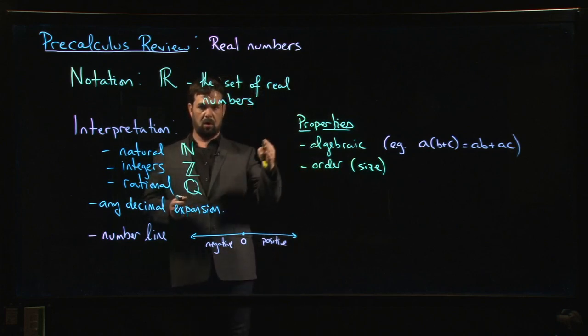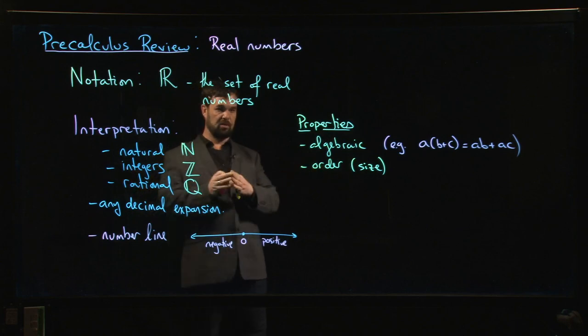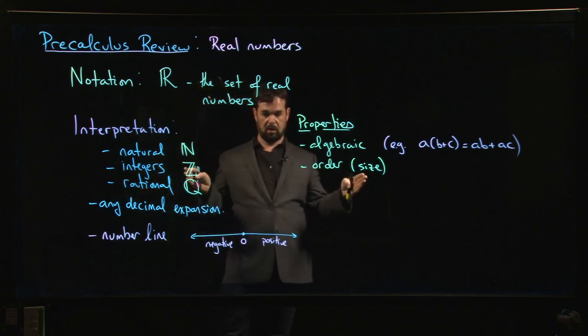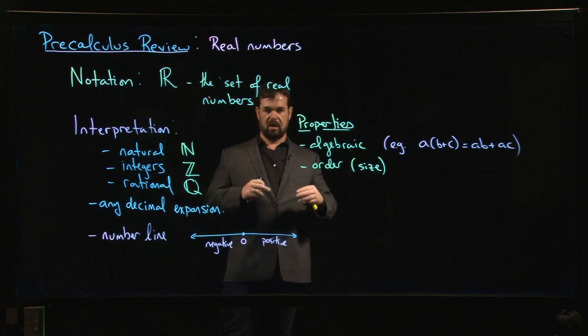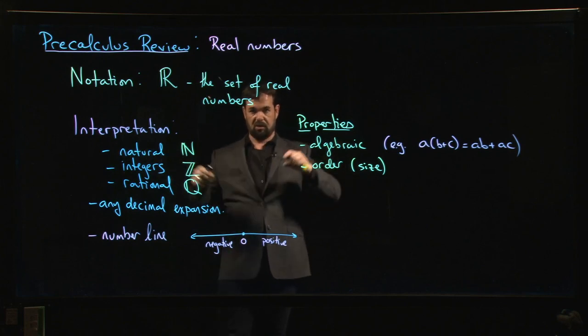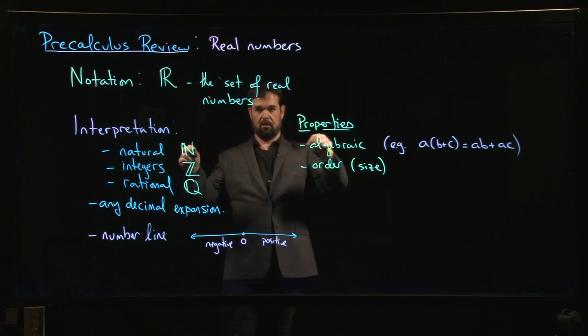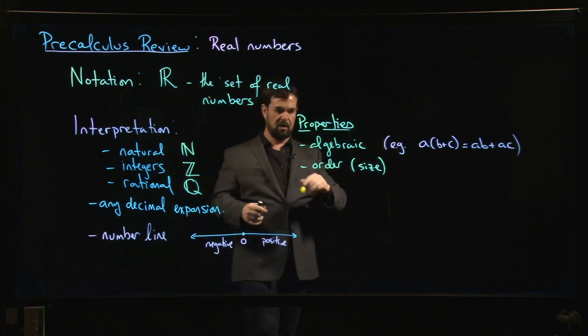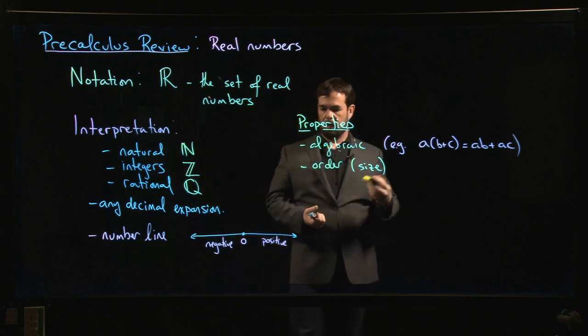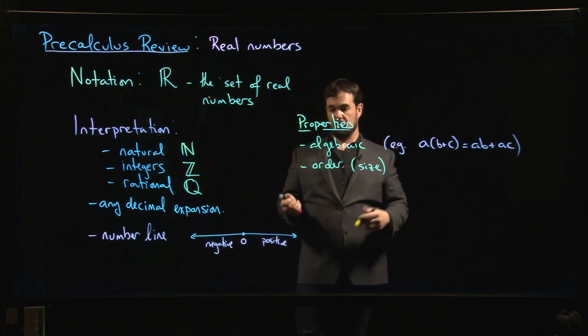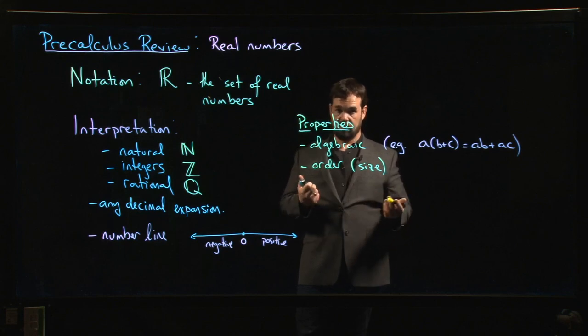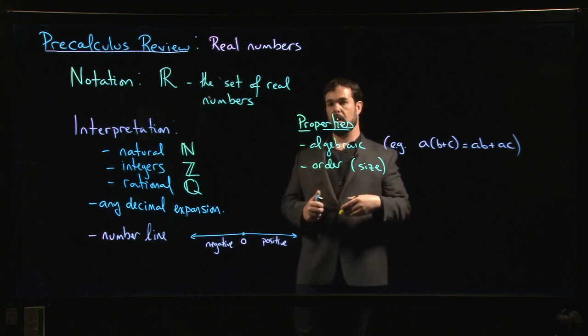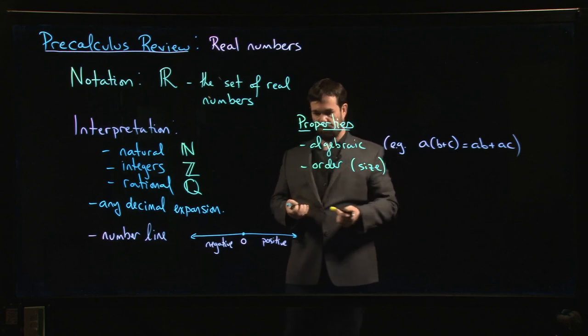Any set of real numbers, you can always put them in order. There isn't anything kind of different tracks that things might go on. There's just one single straight line, increasing size. So we have all those order properties which come up when you're trying to, let's say, solve inequalities, things like that. So this is going to pop up again later. So we won't spell everything out now.